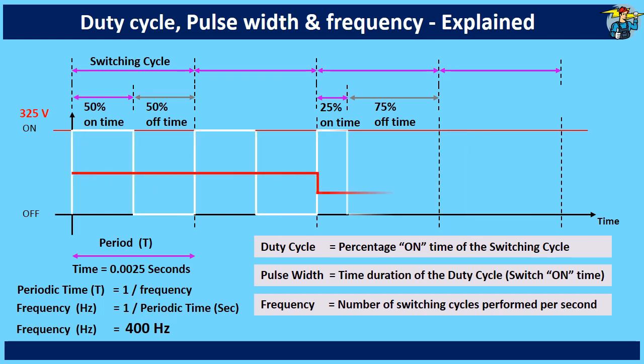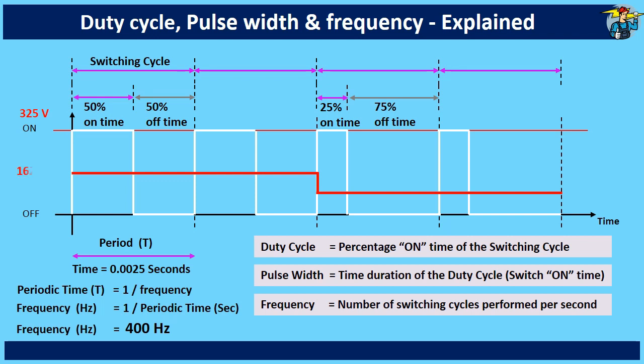If you check the voltage across the load now, 325 volts has become half of that during the first two cycles, and is 25% of that voltage when duty cycle is 25%. So the DC supply voltage can be varied by modulating or controlling the pulse width of the switching cycle.